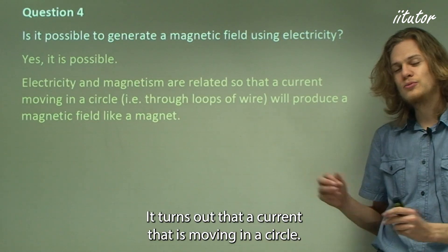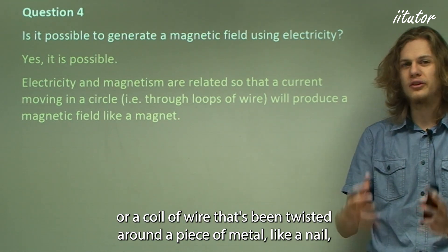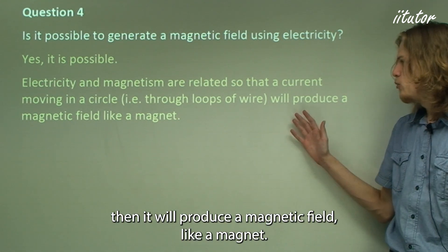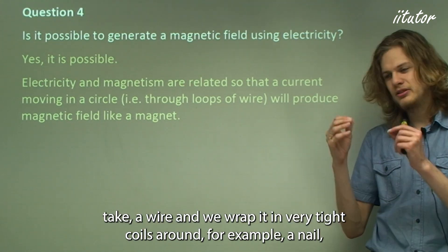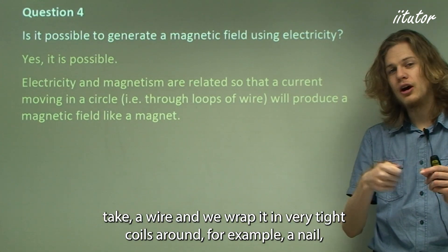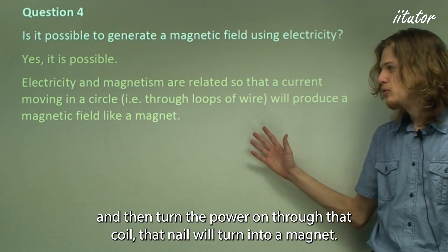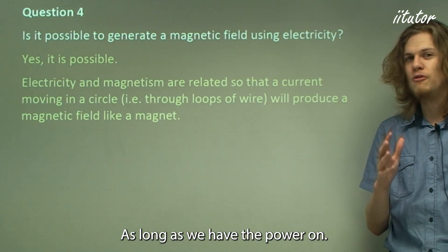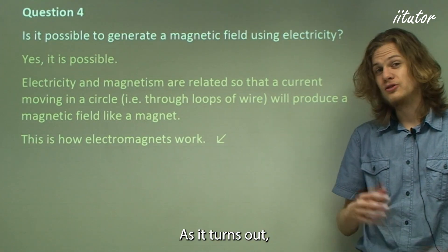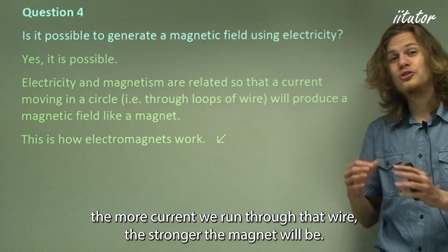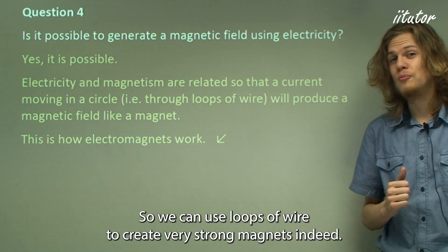It turns out that a current that is moving in a circle, for example loops of wire, or a coil of wire that's been twisted around a piece of metal like a nail, then it will produce a magnetic field like a magnet. So what this means is that if we take a wire and we wrap it in very tight coils around, for example, a nail, and then turn the power on through that coil, that nail will turn into a magnet, as long as we have the power on. As you might have recognized, this is an electromagnet. As it turns out, the more current we run through that wire, the stronger the magnet will be. So we can use loops of wire to create very strong magnets indeed.